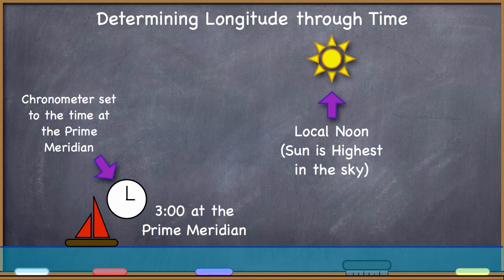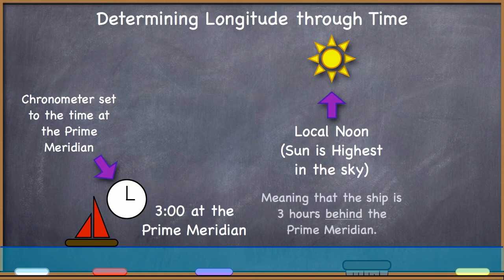So back at the Greenwich Observatory, it is not noon. It is three o'clock PM. Therefore, he will know his longitude.